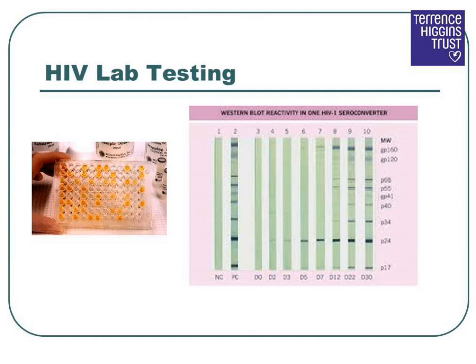Any reactive rapid HIV test result must be confirmed in the lab. This is because a small percentage of rapid HIV tests may give a false positive result — approximately 3 per 1000 tests undertaken. That is why if an initial test indicates the presence of HIV antibodies or antigen, we say it is reactive rather than positive.